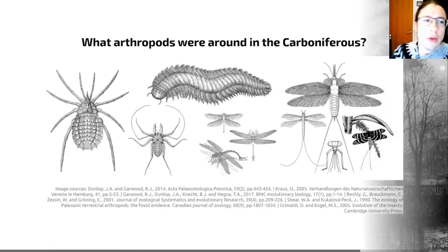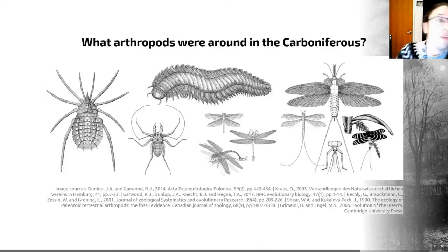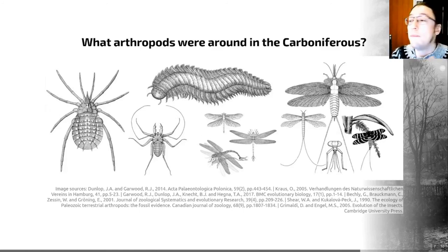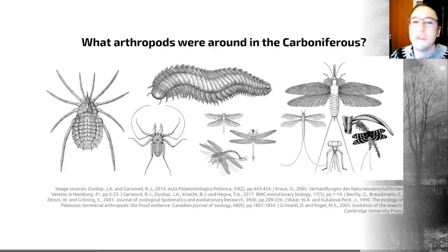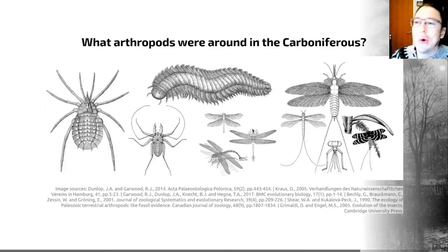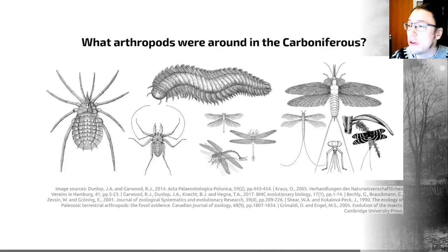So what were the arthropods doing at this time? Well, there was lots of oxygen in the atmosphere, and this drove gigantification in some arthropod groups. Arthropleura is an example — a relative of the millipedes that grew up to about three metres in length. There were also insects related to dragonflies and damselflies that grew potentially up to 70 centimetres to a metre in wingspan. All of the major arthropod groups were on land by this point: myriapods (millipedes and centipedes), arachnids including trigonotarbids and whip spiders, and a wide range of insects.